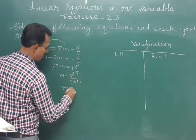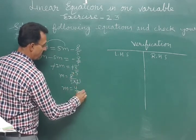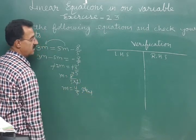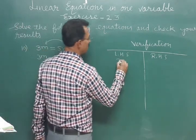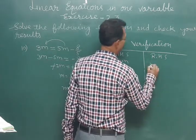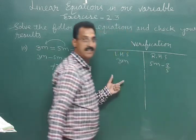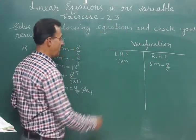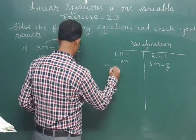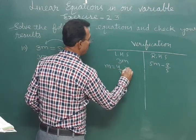So m is equal to 4 upon 5. Let's verify it. So left hand side is 3m. Right hand side is 5m minus 8 upon 5. So m is equal to 4 upon 5.